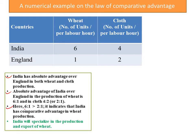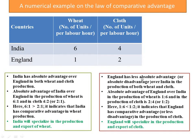Let us draw some points from this numerical example. First, India has absolute advantage over England in both wheat and cloth. The absolute advantage of India over England in wheat production is 6:1, and in cloth it is 4:2 or 2:1. Since 6:1 is greater than 2:1, India has comparative advantage in wheat production over cloth. Similarly, England's absolute advantage over India in wheat is 1:6 and in cloth it is 2:4 or 1:2. Since 1:6 is less than 1:2, England has comparative advantage — or less disadvantage — in the production of cloth.